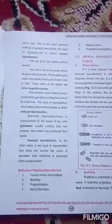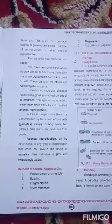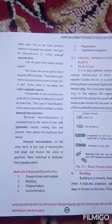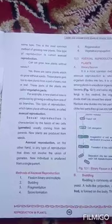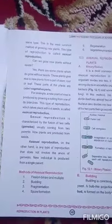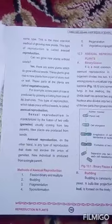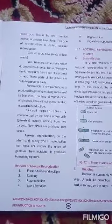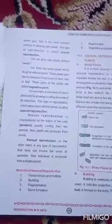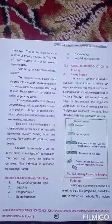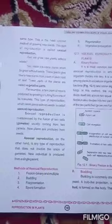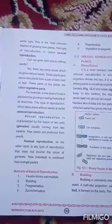Asexual reproduction is that method of reproduction which does not involve the union of gametes. There is no need for both parents — new individuals are produced from a single parent. The methods of asexual reproduction are: binary fission, budding, fragmentation, spore formation, regeneration, and vegetative propagation.